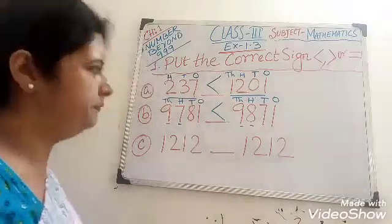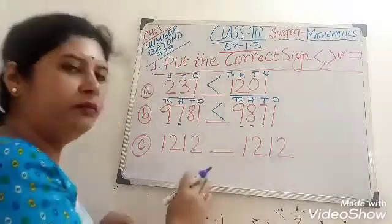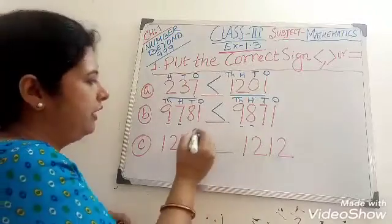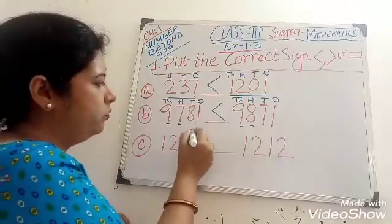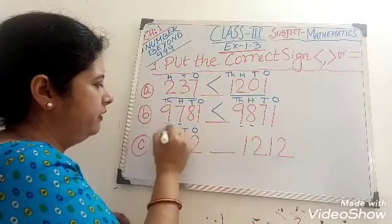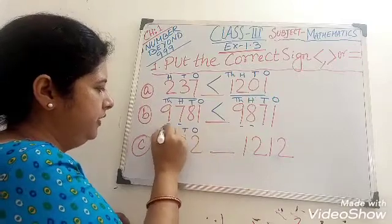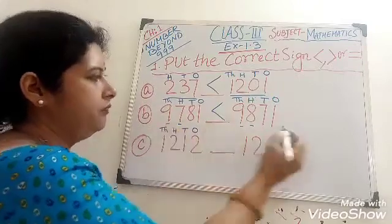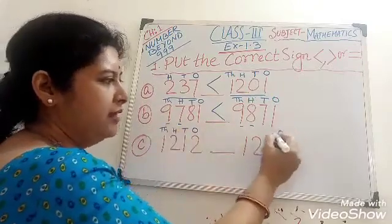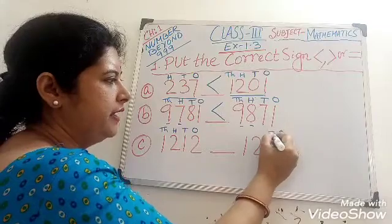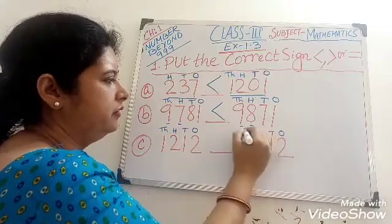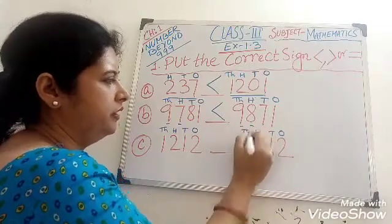Clear? Now come to the next question. Again put 1's, 10's, 100's, 1000. Here also 1's, 10's, 100's, 1000.